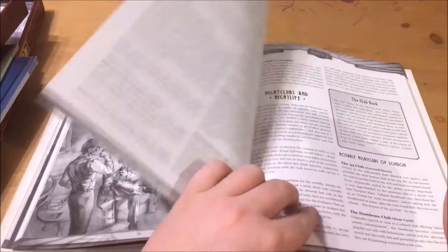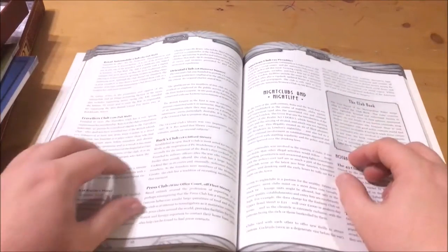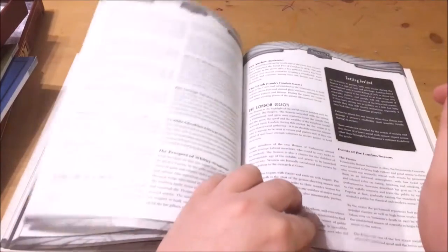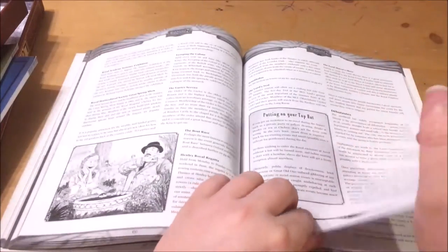We then cover the nightlife of London. This includes all the top nightclubs of the time like the 43 Club and the Hambone Club as well as notable pubs like the York Minster and Prospect of Whitby.